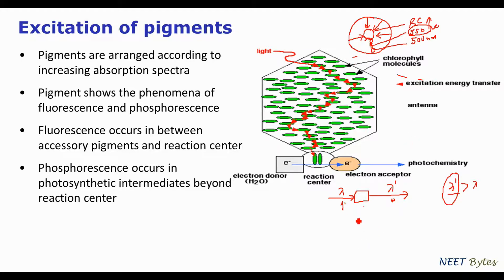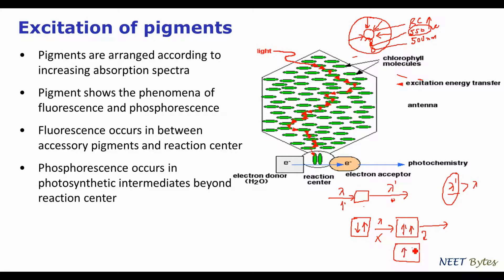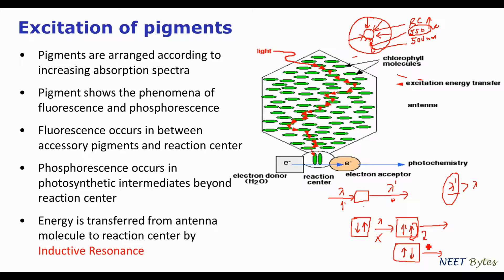Phosphorescence occurs at and beyond the reaction center. When light is withdrawn, light keeps emitting for a very small fraction of a second. The photochemistry behind phosphorescence is that normally electrons are present in an anti-spin manner, but in phosphorescence, electrons are present with the same spin. So when light is given, they remain in the same spin state and light keeps emitting. When light is withdrawn, a fraction of a second is taken for electrons to return to their original position, during which light continues to emit.